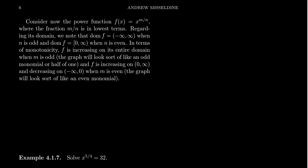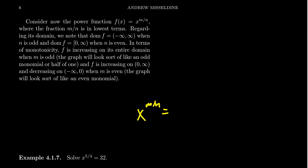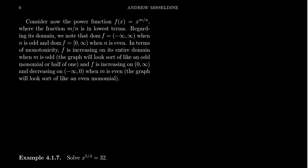In this video I want to talk about solving equations involving power functions, specifically power functions of the form x to the m over n. We're only going to use rational exponents, and we're going to assume these rational exponents are written in lowest terms, so m and n have no common divisors. When you take x to the m over n, by exponent rules this is the same as the nth root of x to the m, so radicals and powers may be involved.